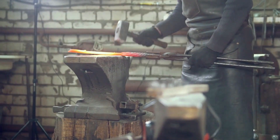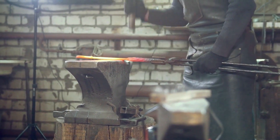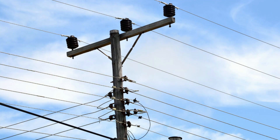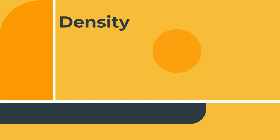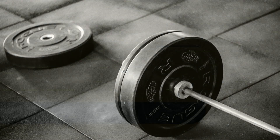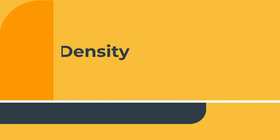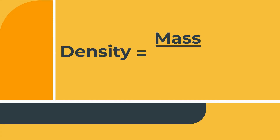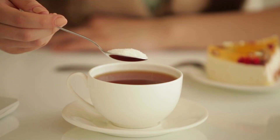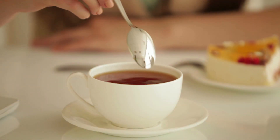Malleable — can you bend it? Conductive — will heat or electricity move through it? Density — how heavy is it for its size? It's a measure of mass divided by volume. Solubility — how easily can it dissolve?